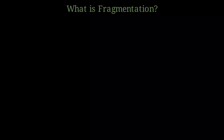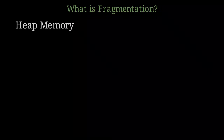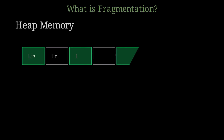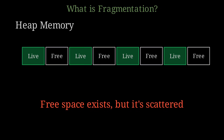So what is memory fragmentation? Imagine a program that's been running for a while. The Mark and Sweep collector has run several times, deallocating garbage objects. Now look at the heap. We have live objects scattered throughout memory, and between them are small gaps where garbage used to be — live object, free space, live object, free space, and so on. The pattern repeats across the heap. There's plenty of free space in total, but it's broken up into small, non-contiguous blocks. Free space exists, but it's scattered everywhere.